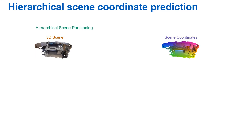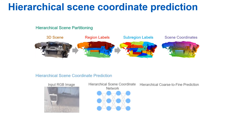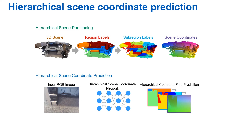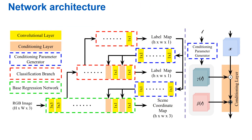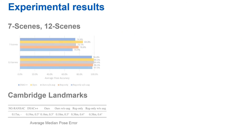In this work, we present a new hierarchical scene coordinate prediction approach to obtain pixel scene coordinates in a coarse-to-fine manner from a single RGB image. Our hierarchical coarse-to-fine architecture is implemented using conditioning layers that are related to the FiLM architecture.